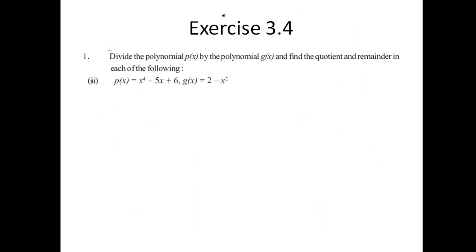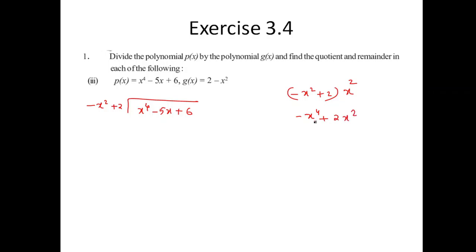Third example. The given equation rearranged is: divisor minus X² plus 2, dividing X⁴ minus 5 and so on. The required term is X⁴, so I multiply by X². The resultant is minus X⁴ plus 2X². Since some X² term is needed, I also multiply by minus 1.